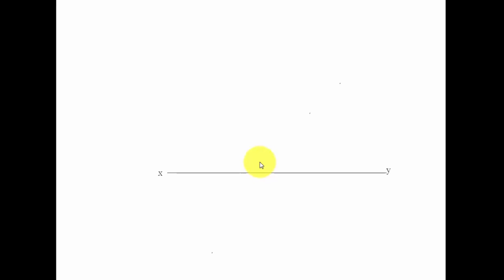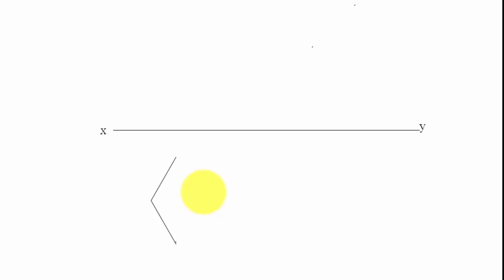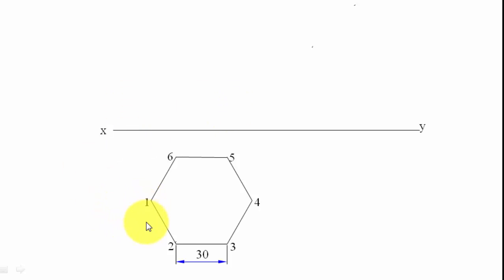We begin by making an XY line — above which we have the front view, and below which we have the top view. Since the hexagonal prism is resting with its base on the horizontal plane, we kick off by making the top view as a horizontal hexagon. All edges are 30 mm each. Let's name each edge starting from this one: one, two, three, four, five, six.